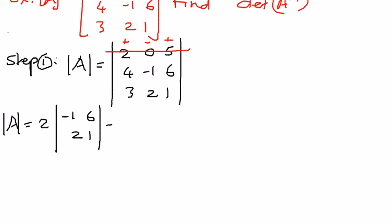The second element is -0 times - we could have stricken it off because 0 times any number is going to be 0, but let me write that and then strike it out - 0 times 4, 6, 3, and 1. Then plus 5 times the minor of that, which will be 4, -1, 3, and 2.